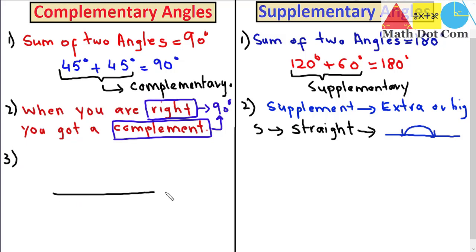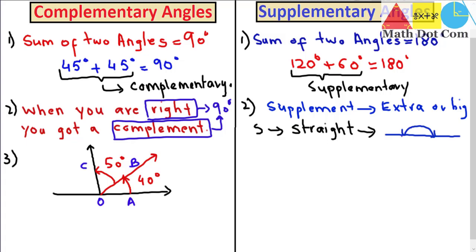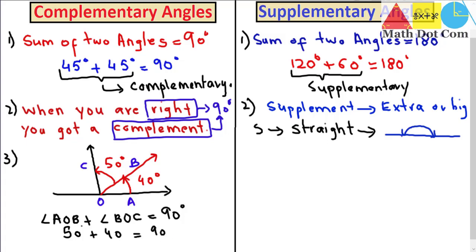Now let's draw a diagram to show complementary and supplementary angles. In a coordinate system, if one angle is 40 degrees and the other is 50 degrees, these two adjacent angles form complementary angles. Labeling the points as O, A, B, and C, we can write: angle AOB plus angle BOC equals 90 degrees. So 50 plus 40 equals 90 degrees — these are complementary angles.